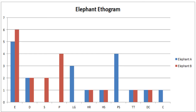So for elephant A, which in my chart is the blue line, that elephant ate five times in the amount of time that she watched. Elephant B ate six times. You can see that along the up-and-down axis — we call that the y-axis of the graph — that just tells you how often this happened: five and six times. You'll see that for drinking, both elephants drank two times. So all the way down this chart, it shows which elephants are doing which behaviors.